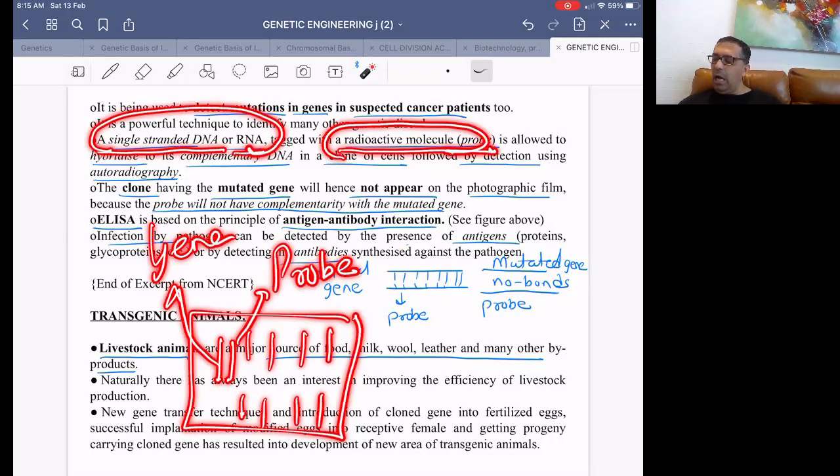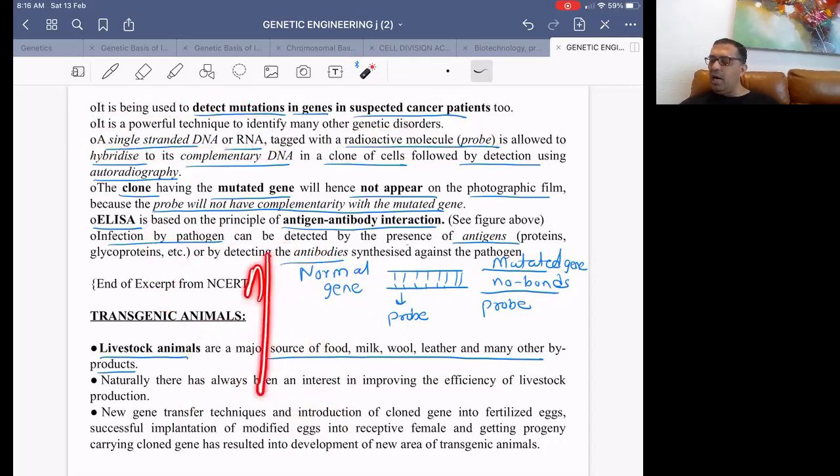The probe is either single stranded DNA or RNA tagged with a radioactive molecule. If gene and probe pair with each other, that means the gene is normal. Normal gene hai.